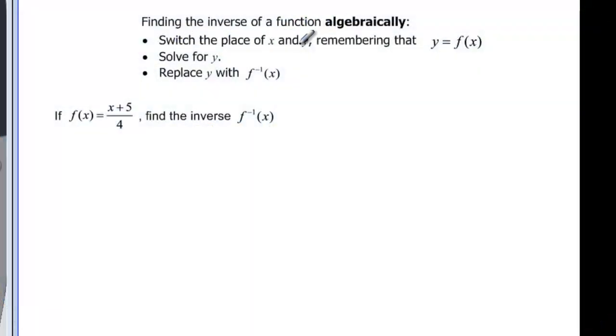We're going to switch the place of x and y, remembering that y equals f(x), because it's going to look like function notation, but just remember that f(x) is really a y. Then we're going to solve for y after we've switched the places, and then in the end we'll replace y with f inverse of x, because remember function notation is the same thing as a y.